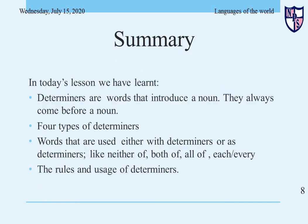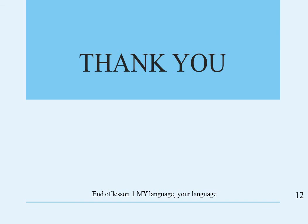For the summary of today's lesson: we have learnt that determiners are words that introduce a noun and always come before a noun; there are four types of determiners; words used either with determiners or as determiners include neither of, both of, all of, each, and every; and the rules and usage of these determiners. Thank you for watching. If you have any queries, write in the class comments in your Edmodo section. Allah Hafiz. Have a good day.